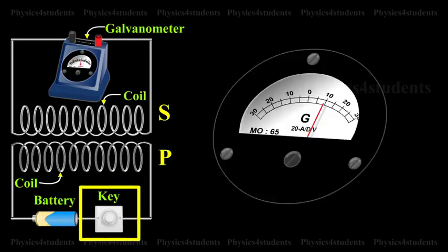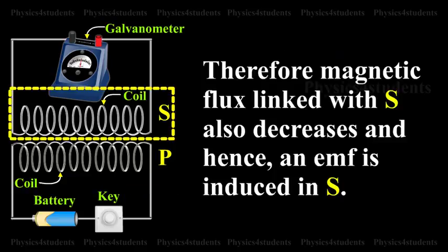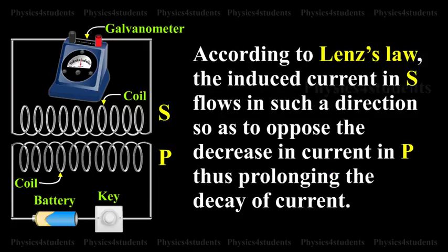When key K is released, current starts decreasing from maximum to 0. Consequently, magnetic flux linked with P decreases. Therefore, magnetic flux linked with S also decreases and hence an EMF is induced in S. According to Lenz's law, the induced current in S flows in such a direction so as to oppose the decrease in current in P, thus prolonging the decay of current.